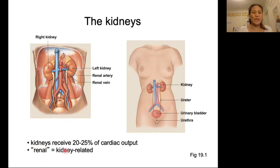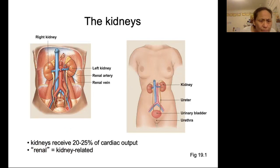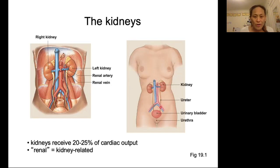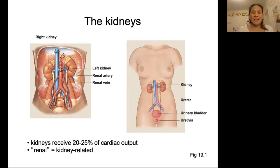Renal equals kidney-related. The kidneys decide which substances in our blood to keep within our bodies and which to get rid of. Our blood enters the kidney via the renal arteries, shown in red here. It gets processed by the kidneys, and the materials we decide to keep re-enter our bloodstream via the renal vein. The materials we decide to get rid of leave through the ureter — that's basically our urine leaving the kidneys. The urine gets stored in the urinary bladder until we are ready to part with it, and then it exits through the urethra.